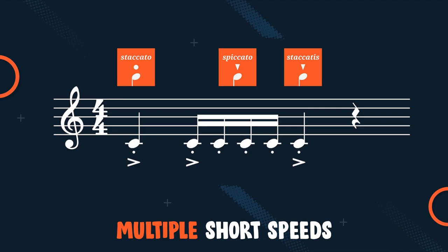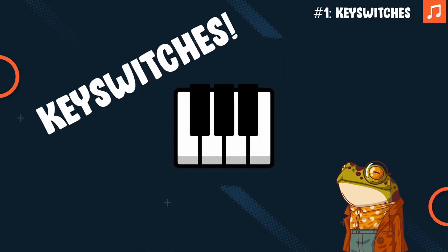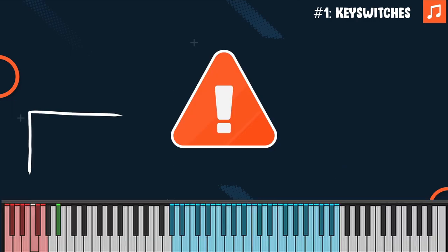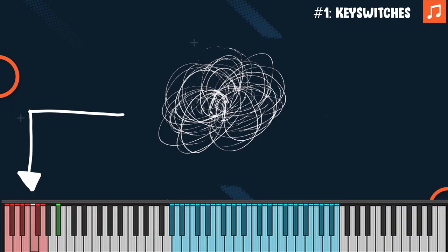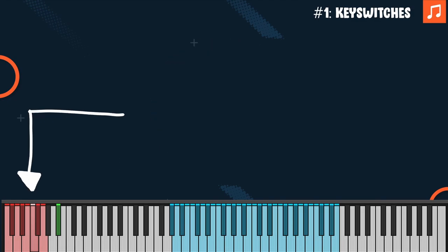If you follow this principle throughout your entire song, it will sound more realistic than only using one articulation. To achieve this, you can use key switches to trigger the different articulations in the MIDI. But if your keyboard doesn't have 88 keys, you're going to be in agony, because often the key switches will be out of your range.